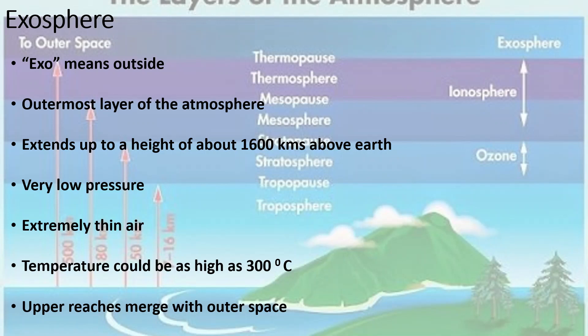Exo means outside, so the exosphere is the outermost layer of the atmosphere. It reaches up to a height of about 1600 kilometers and has extremely thin air and very low pressure. Temperatures can be as high as 300 degrees centigrade. We cannot define a sharp boundary between the exosphere and outer space — because it is filled with very thin air and very low pressure, it gradually peters out and merges with outer space.